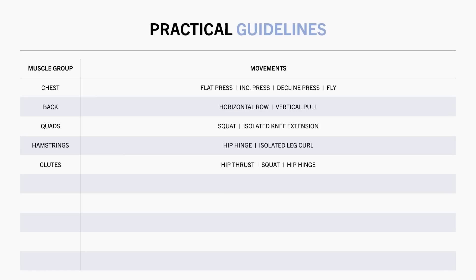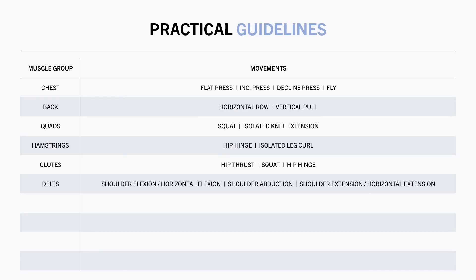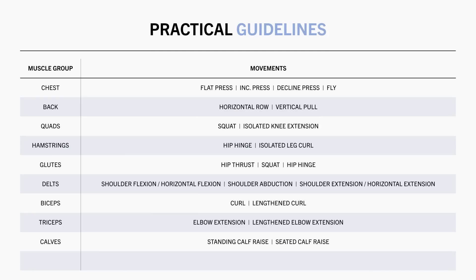However, the glutes are probably going to be trained significantly via quad and hamstring training, so you may not need to include too much direct volume here. To maximize delt growth, we want to include a shoulder flexion or horizontal flexion movement to train the front delts, a shoulder abduction exercise for the middle delts, and a shoulder extension or horizontal extension exercise to hit the rear delts. However, these muscles will be heavily trained via chest and back training, so it may not be necessary to perform too much direct volume here. For the biceps, any curl variation is probably sufficient, but including at least one exercise which trains them in a stretched position is probably going to be beneficial. Similarly, any elbow extension variation is probably sufficient for the triceps, but ensure at least one of your exercises trains them in a stretched position. For the calves, a standing calf raise variation is sufficient, but if you want to specifically bias the soleus, a seated variation may also be included.